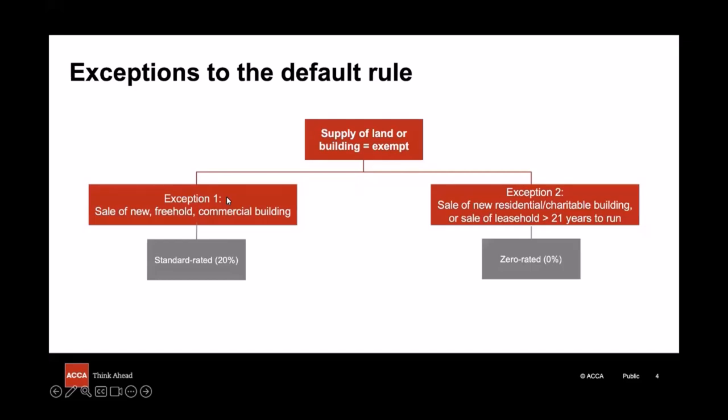The second exception to watch out for is the sale of a brand new building for residential or charitable use, or the sale of a leasehold with more than 21 years to run. These are actually zero rated — still a taxable supply but at a rate of zero percent. This is your starting point where you see land or buildings in a question and you're thinking about the VAT impact.